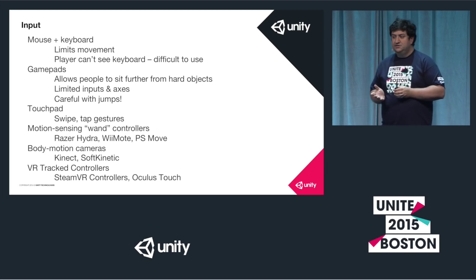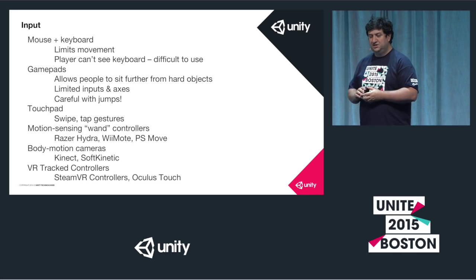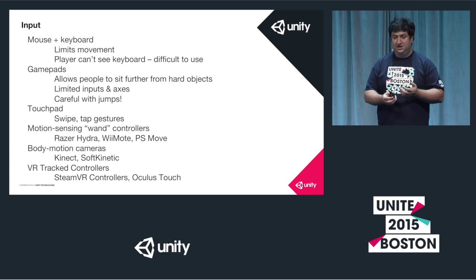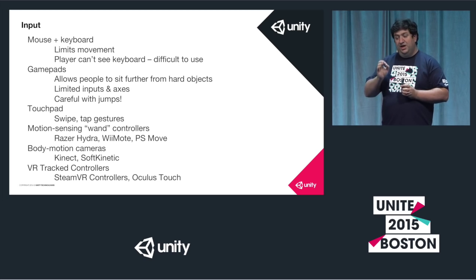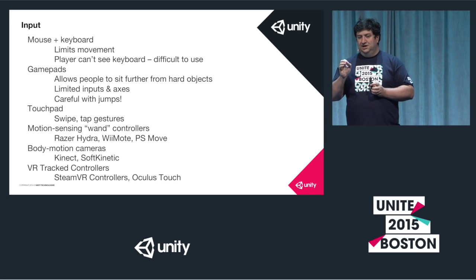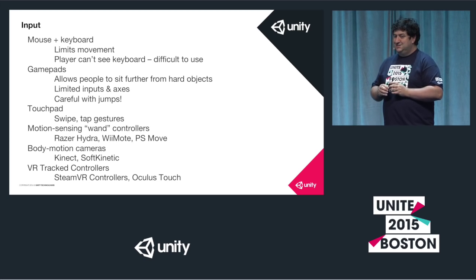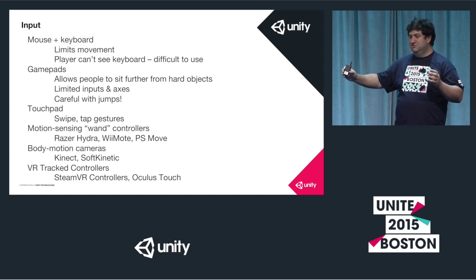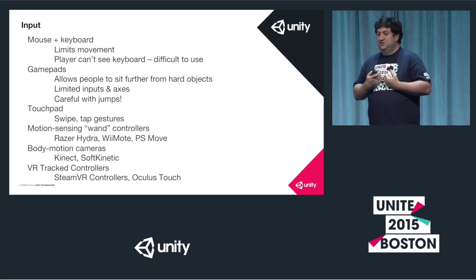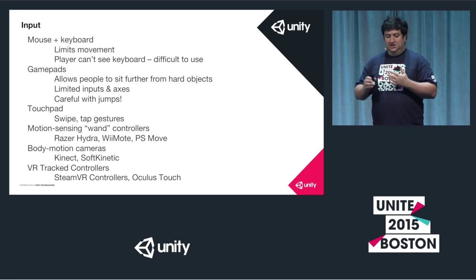Gamepads are a bit better, especially because your player's not wandering around hitting real-life objects they can't see. But the main issue with gamepads is that a jump is just one button away. Jumping is complicated on VR - when Pete talks about the weakest link of the VR chain, he will tell you about jumping and sudden movements.